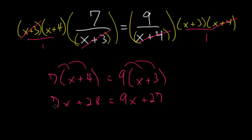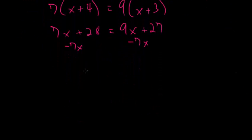Now our goal is to get all the x's on one side of the equation. So I can subtract 7x from each side, and now I'm left with 28 is equal to 2x plus 27.